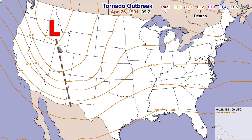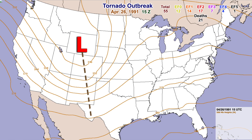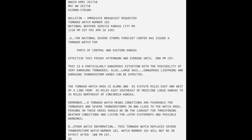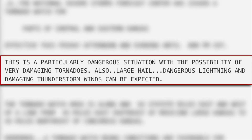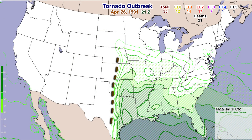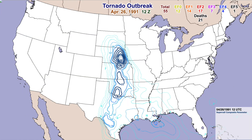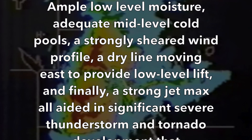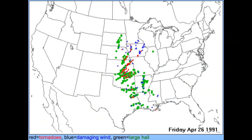To the west over the southwestern US, a mid-level trough was oriented northwest to southeast — another indicator of a strong storm system with sufficient mid-level lift. With these ingredients in place, the Storm Prediction Center issued a high risk of severe weather across the central plains at 12:20 PM CDT. The SPC issued a Particularly Dangerous Situation, or PDS, tornado watch, giving strong warnings of the potential for multiple strong to violent tornadoes over the next 12 hours. By 7 PM the severe weather parameters were lining up — ample low-level moisture, adequate mid-level cold pools, a strongly sheared wind profile, a dry line moving east, and a strong jet max — all aiding in significant tornado development stretching from Texas to Iowa.